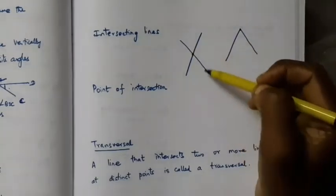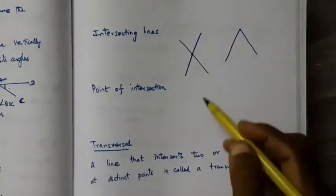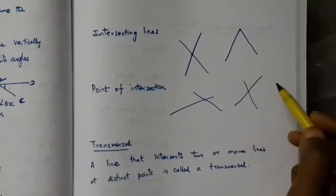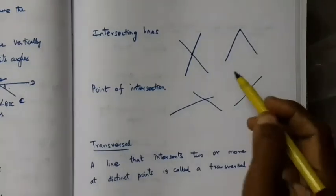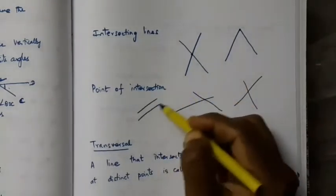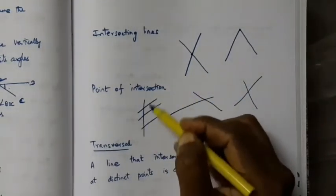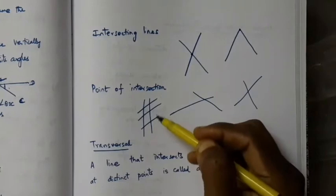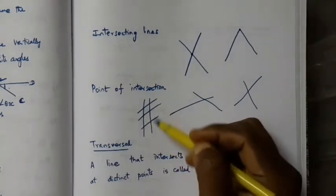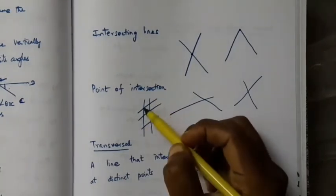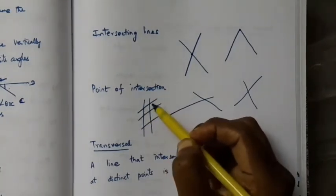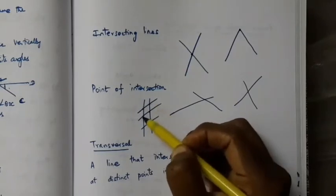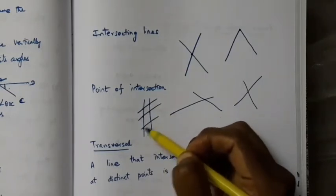Intersecting lines can meet anywhere and there can be many such points. These lines are called intersecting lines and the points where they meet each other are called points of intersection.